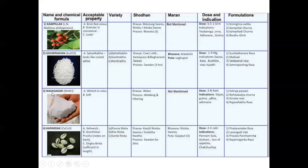Next is Navasadhar — NH4CL — whitish in color and soft. There are no types. For Shodhana, water is used in a process of washing and filtering. Marana is not mentioned. Dose is 2 to 8 Ratti. Indications: Deepana — appetizer, Gulma — any sort of tumor, Pliha — splenomegaly, and Adhmana — gas in the stomach. Formulations of Navasadara include Charaparapati, Rohitakadhyachurna, Dravakarasa, and Rajavallabharasa.